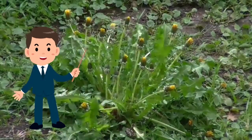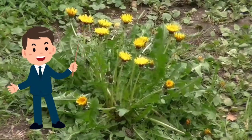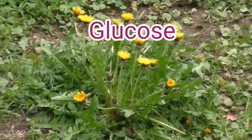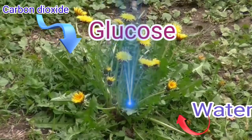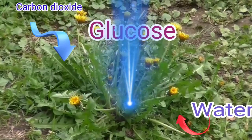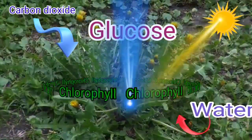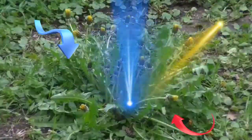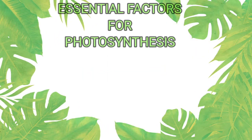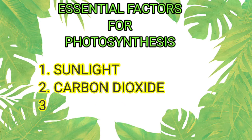The definition of photosynthesis is: photosynthesis is a photochemical reaction in which, at the end of the reaction, carbohydrates are prepared by using inorganic compounds like carbon dioxide and water in the presence of sunlight in chloroplasts of green plants with the help of chlorophyll pigment. As per the definition of photosynthesis, there are four essential factors: sunlight, carbon dioxide, water, and chlorophyll.